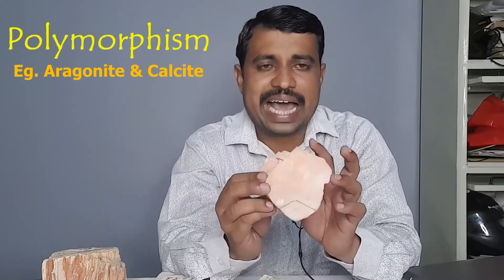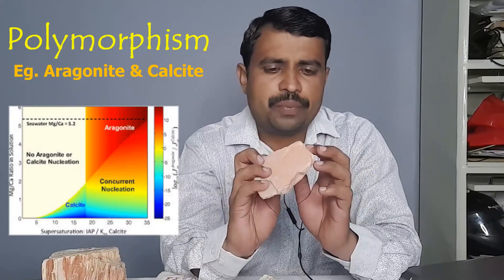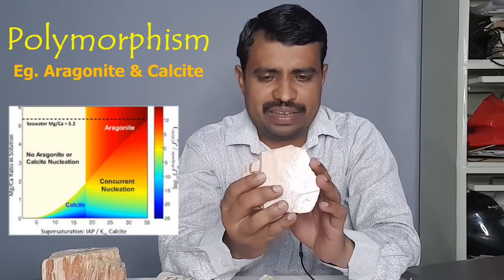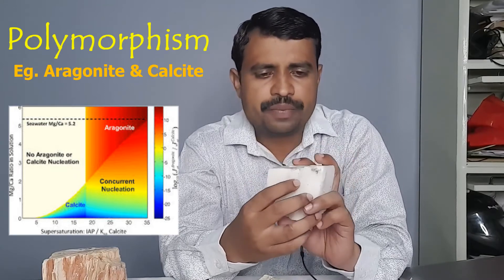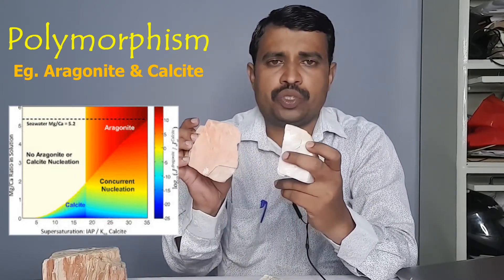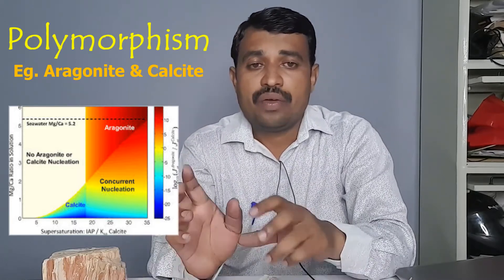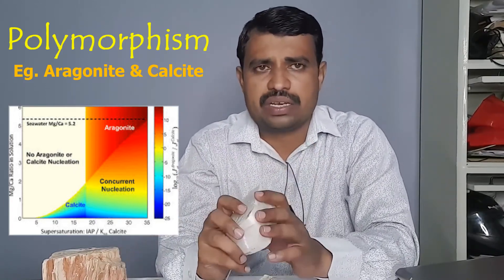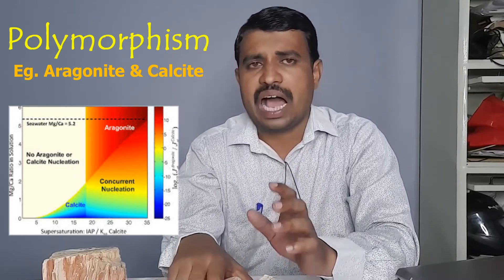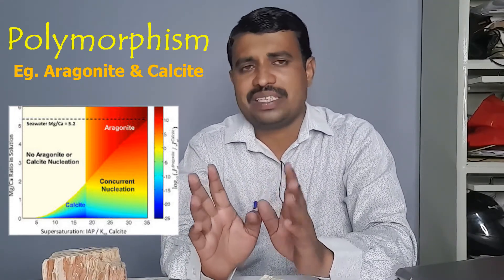The next example involves minerals with calcium carbonate chemical composition. There are two polymorphs: one is the high-pressure form called aragonite — this mineral has chemical composition CaCO3 — and the other is calcite, also having chemical composition CaCO3. They have the same chemical composition but different structures. Aragonite has an orthorhombic crystal system, whereas calcite has a hexagonal crystal system. The high-pressure form is aragonite and the low-pressure form is calcite.